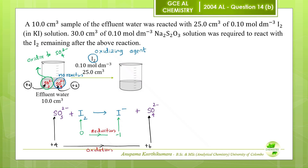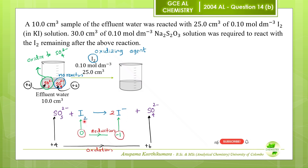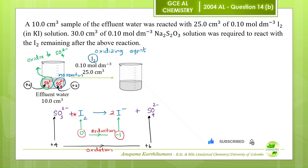Now we will balance the redox reaction between sulphite ions and iodine. First, balance the number of iodine atoms. The oxidation state of iodine in I₂ is 0, and the oxidation state of iodine in the iodide ion is minus 1. When the oxidation state of iodine changes from 0 to minus 1, it involves 1 electron per iodine atom. During this reduction process, both iodine atoms in the iodine molecule reduce to iodide ions. Therefore, the total number of electrons involved during the reduction process is 2 electrons.